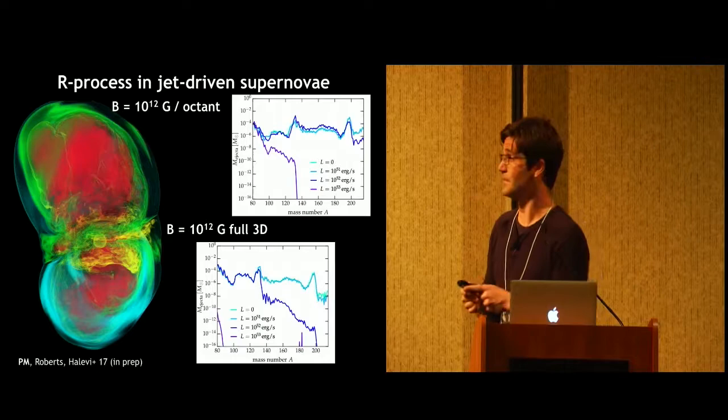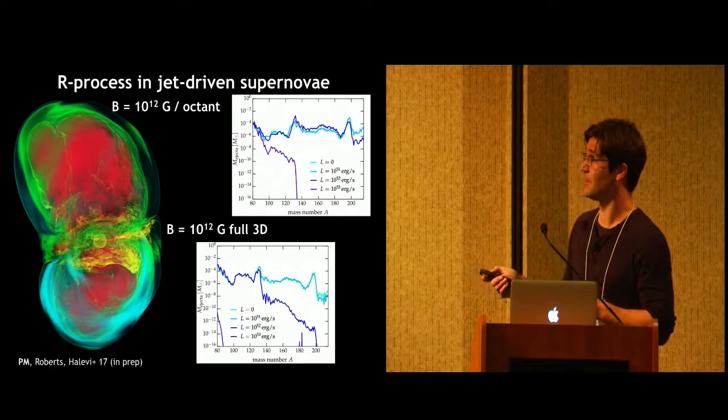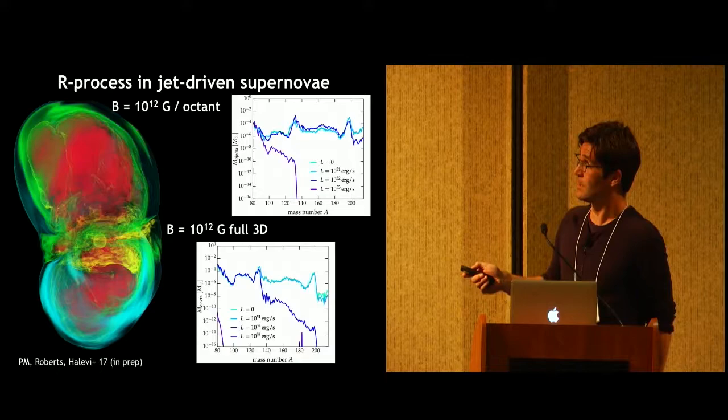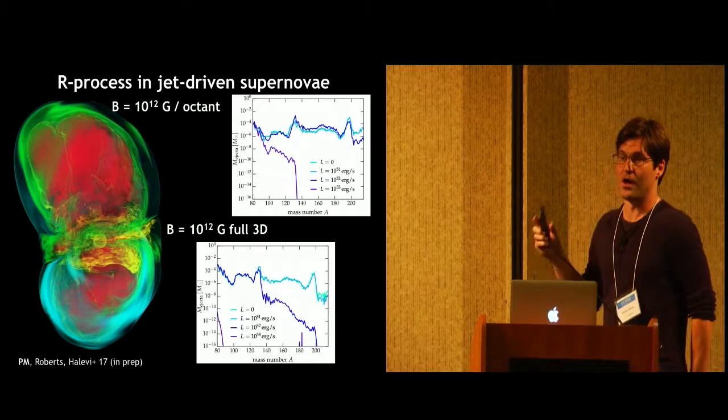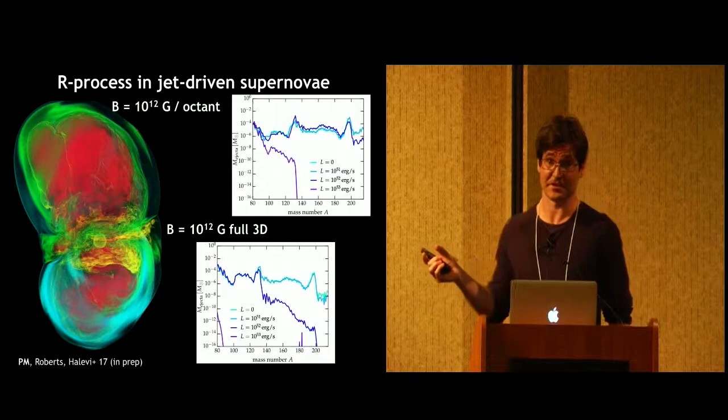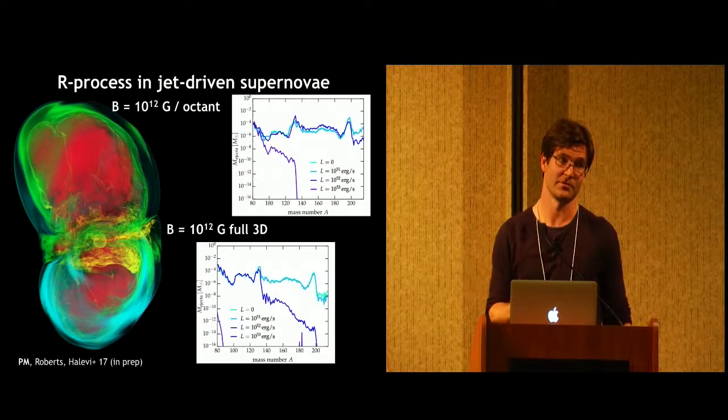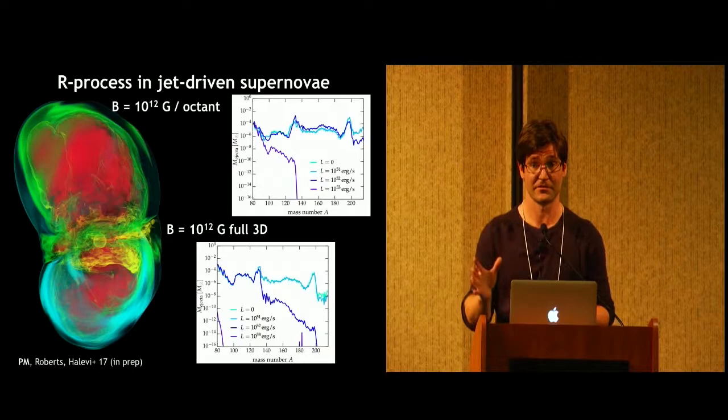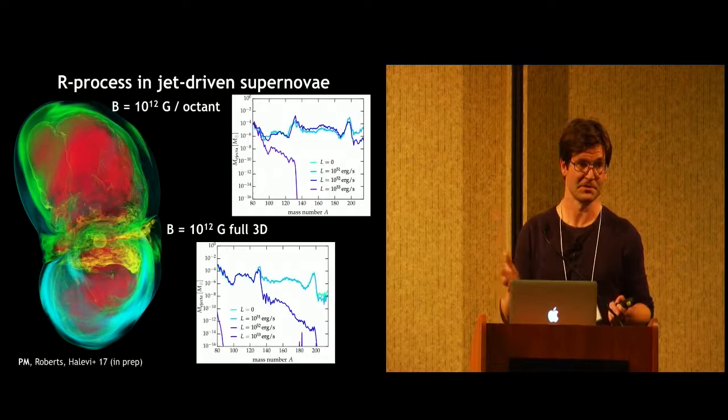So taking this one step further and looking at the more realistic simulations that we had done where we don't start from this very artificially high field, you see that this gets even less robust for the R process. So the top plot shows you the abundance pattern again for different neutrino luminosities, all the way from no neutrino luminosity to 10^53 ergs per second. For a 10^12 Gauss initial field, so this is the simulation I had shown you in full 3D before. Here we limit it to octant symmetry which makes it slightly more similar to what a 2D simulation looks like. And here you see that already for 10^53 ergs, for example, this actually falls off completely in terms of the second and third peak. If you then go to an actual full 3D simulation, you see that really you only get robust third peak R process, and even for the second peak it matters now which neutrino luminosity you take into account. So really this is pretty crucial to figure out how this looks like for a full 3D simulation with the realistic neutrino treatment to figure out if jet-driven core collapse supernova really can contribute in the early universe to explain some of the R process nucleosynthesis that we're seeing in the enrichment of stars.